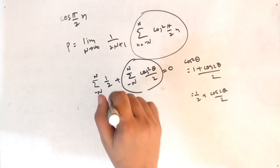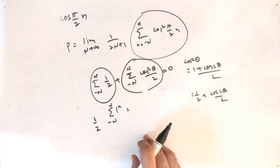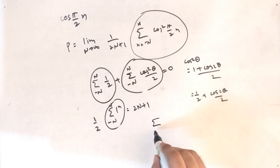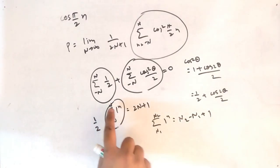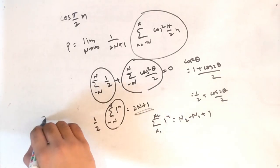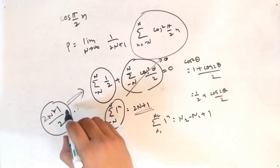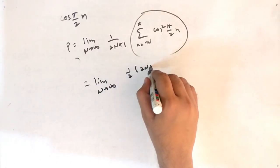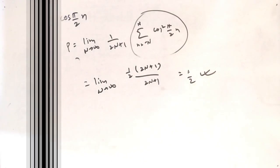For the remaining term: summation from −N to N of 1/2, pull the 1/2 outside to get (1/2) × summation of 1^n from −N to N. Using the formula, this equals (1/2)(2N+1). Substituting into the power formula: lim(N→∞) of (1/(2N+1)) × (2N+1)/2 = 1/2. So power = 1/2 Watts for the periodic cosine signal.